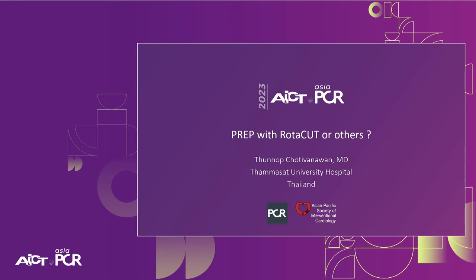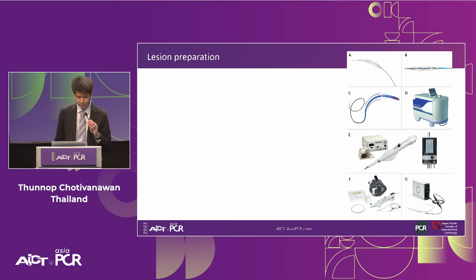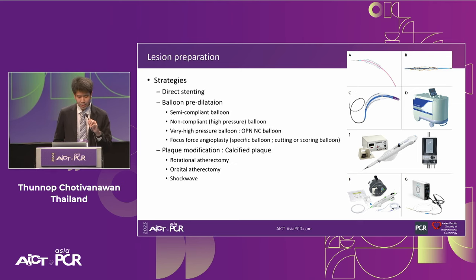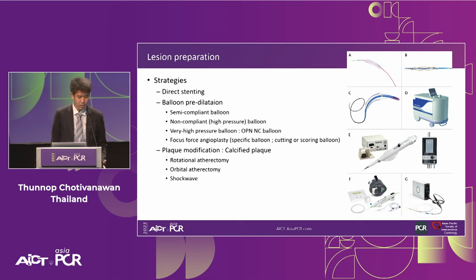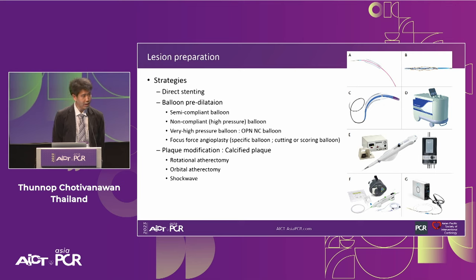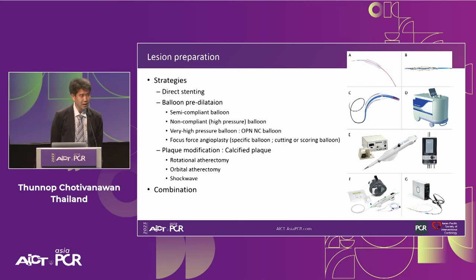I'll now talk about the rota-cut strategy. The strategy for PCI has many techniques: direct stenting for simple lesions; balloon preparation including semi-compliant, non-compliant, or high-pressure balloons; focused-force angioplasty using cutting or scoring balloons; and for calcified plaque, plaque modification by device — rotational atherectomy, orbital atherectomy, and shockwave. Sometimes a combination of these techniques is needed for a better result.